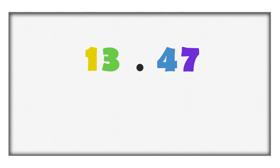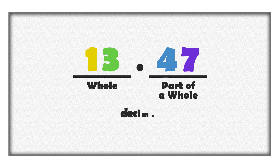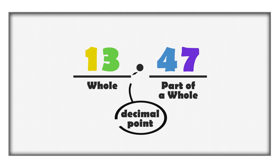Decimal numbers are values that include a whole and part of a whole separated by a decimal point. Just like whole numbers, decimal numbers can be subtracted from each other.